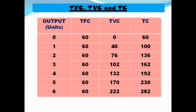Now we come to the table. In the first column we have output or units produced, 0 to 6. Then we have TFC which is constant at 60 at all levels of output. Even if output is 0, TFC is positive — keep this in mind. TVC for 0 level of output is 0. TC is the summation of TFC and TVC, so 60 plus 0 is 60.